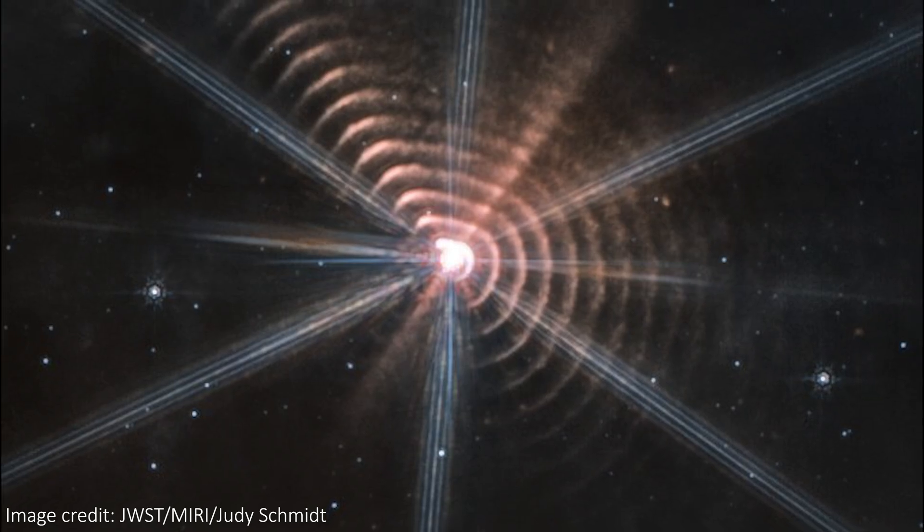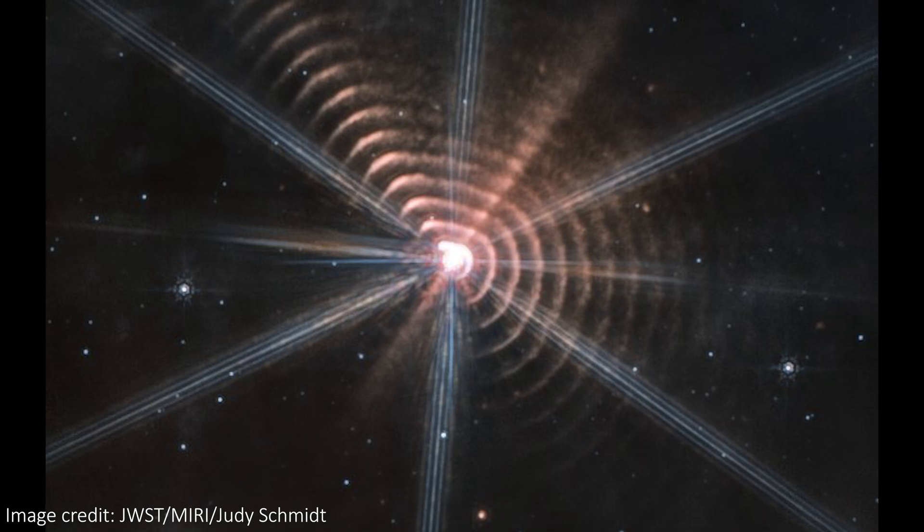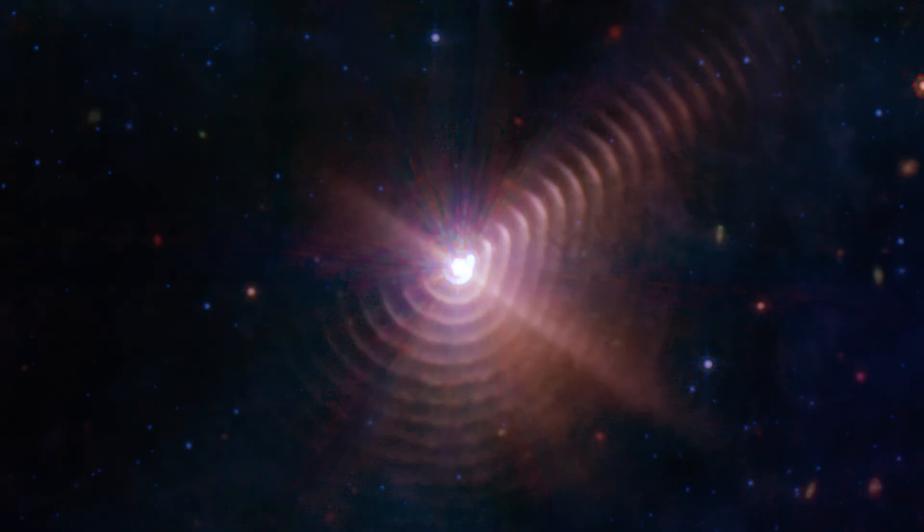This is similar to how the ringed star got its structure in that other Wolf-Rayet system we previously saw from JWST, but on a much longer time scale.